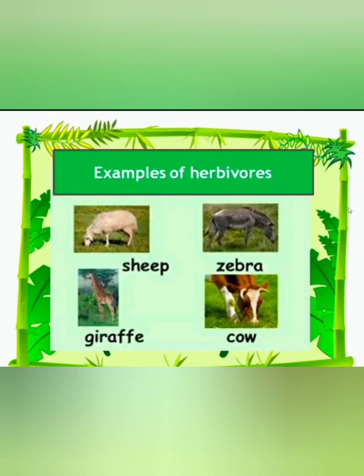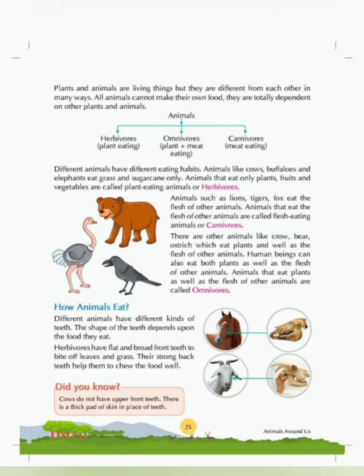Some examples of herbivores are sheep, zebra, giraffe, cow, buffaloes, elephants and many more.